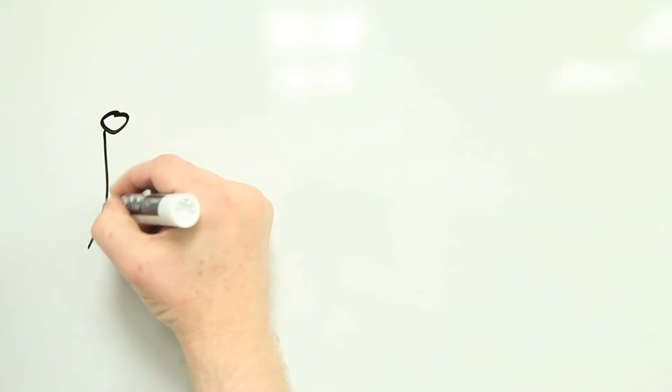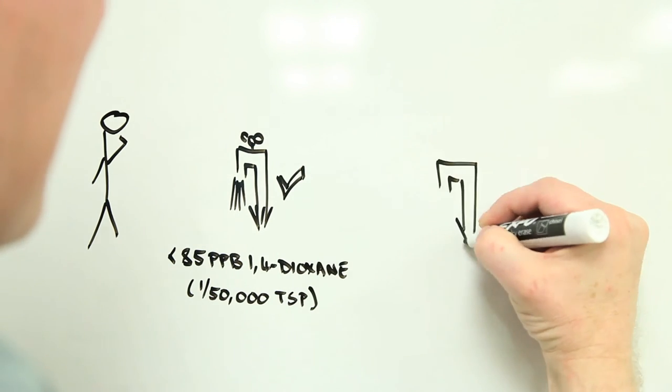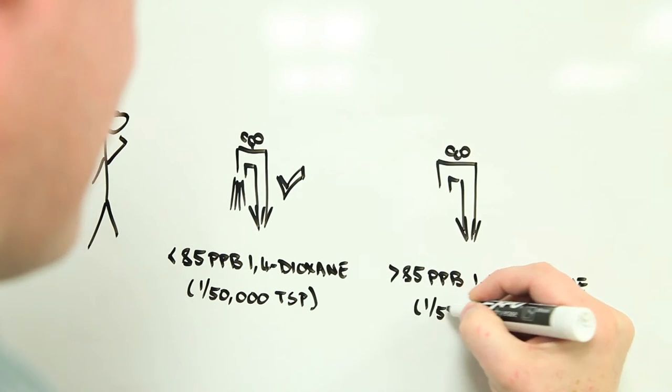The Michigan clean-up limit for dioxane is 85 parts per billion, or just under 20 millionths of a teaspoon per liter of water. This is the theoretical level of contamination people could be exposed to before action is taken.